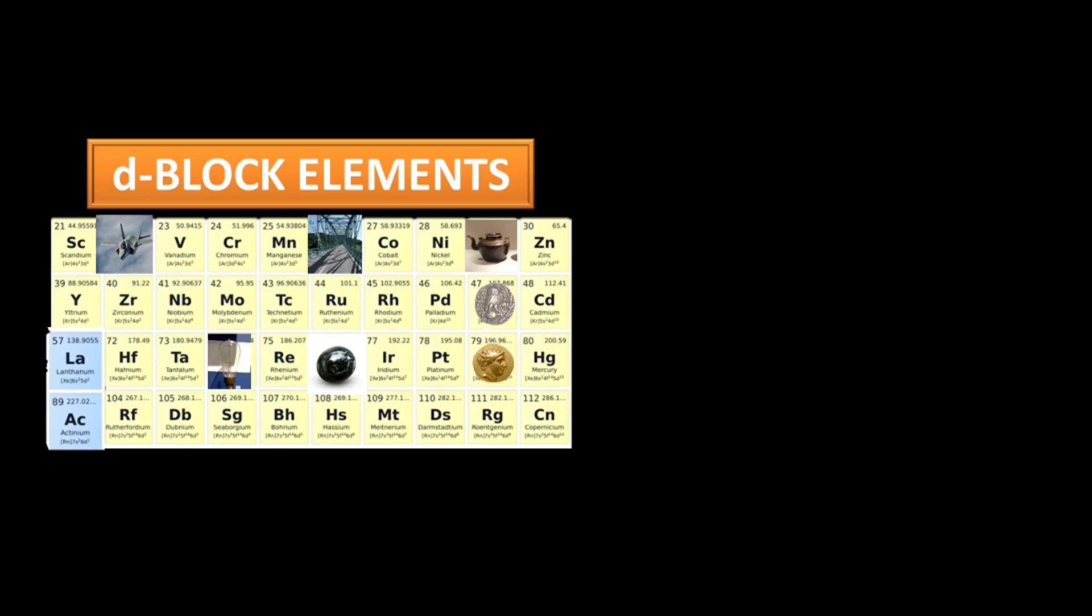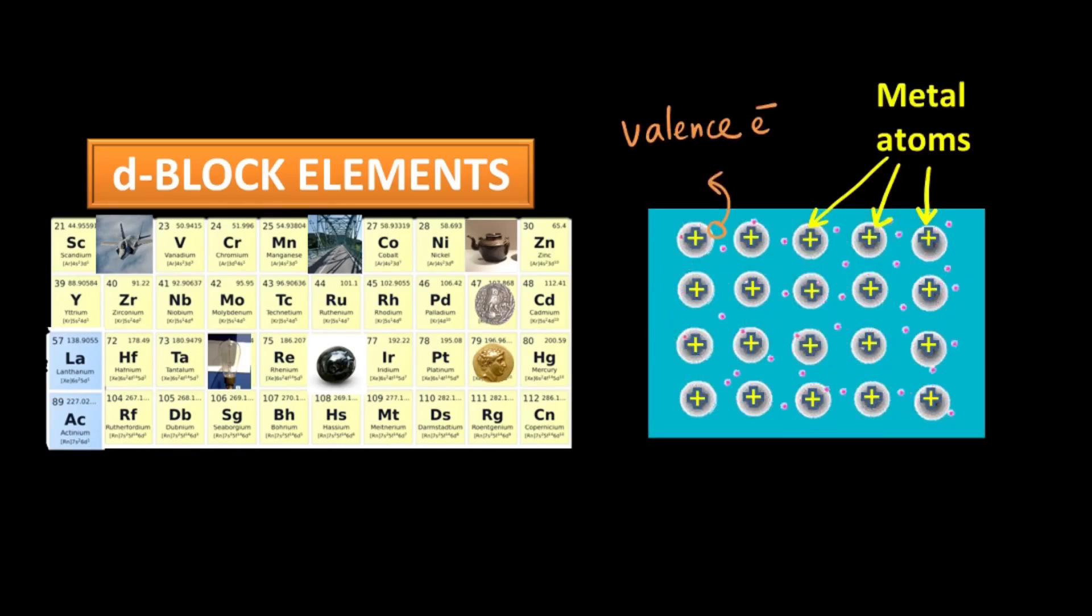All the elements of the d-block are metals. And in metals, the valence electron is actually not attached to any one particular atom, rather it is free to move around the whole metal lattice. So we have a grid of positively charged metal ions which are surrounded by a sea of electrons and this negative sea of electrons actually attracts and holds the metal lattice together.